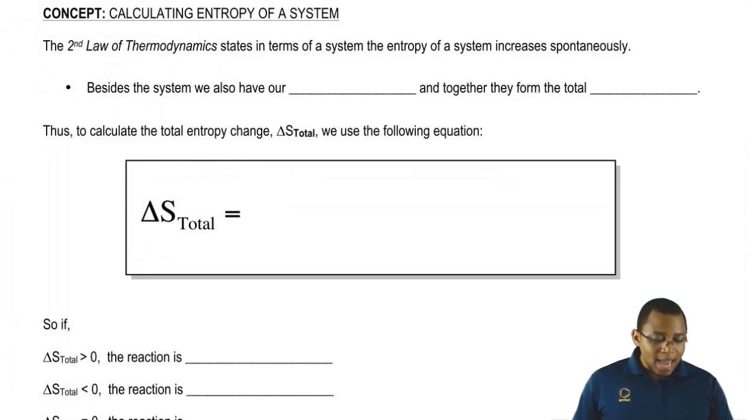Now, we're saying that the second law of thermodynamics talks in terms of the system and it says that the entropy of a system increases spontaneously. Remember, the entropy of the universe is gradually increasing. The world is getting more and more chaotic.